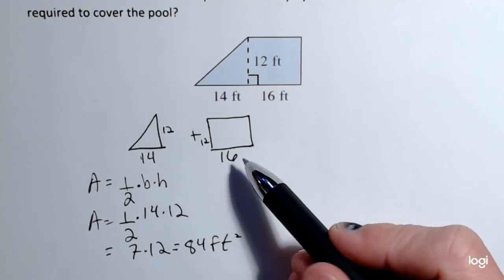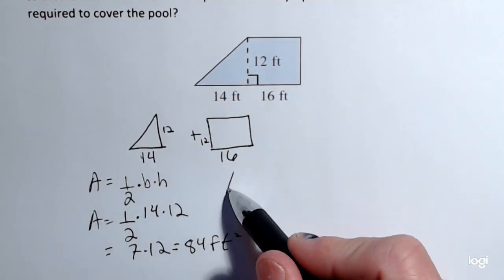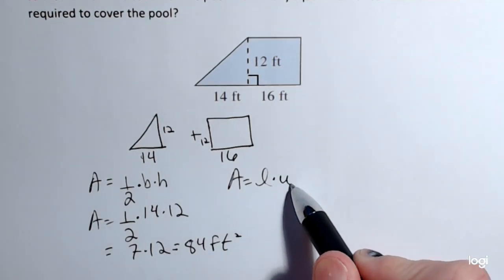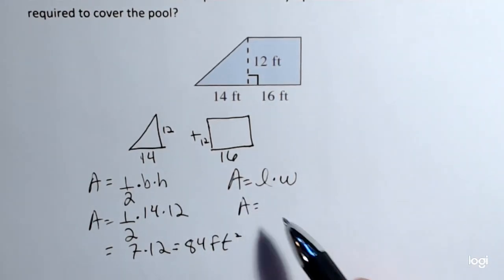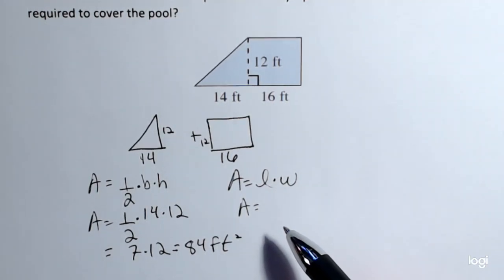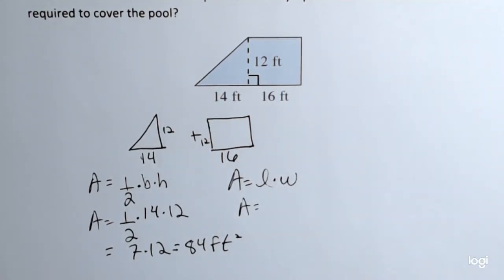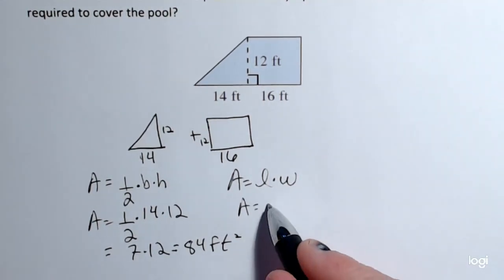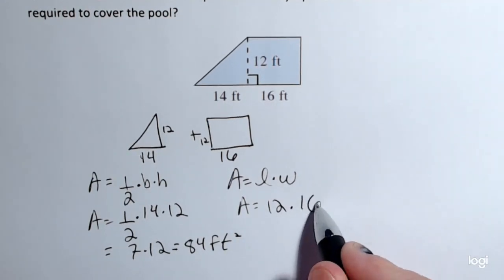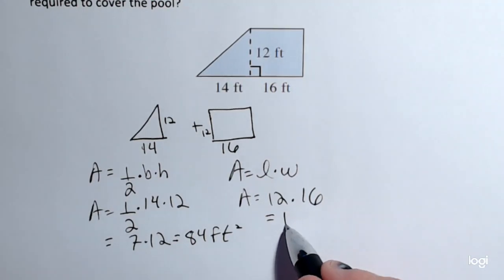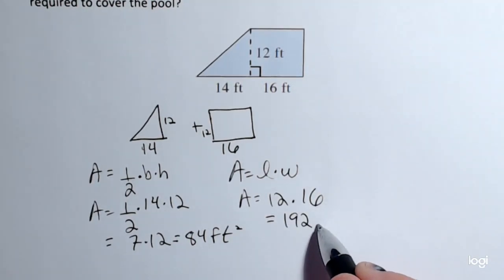And this is the rectangle. The area of a rectangle is given by length times width. Pretty simple calculation. So it doesn't really matter which one you call the length or which one you call the width. Multiplication is commutative. So I'm just going to go ahead and put it in as 12 times 16, and 12 times 16 is 192, and that'll be in feet squared.